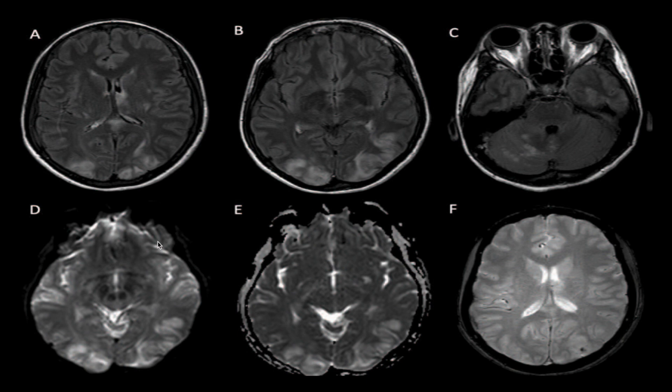In panels D and E — diffusion-weighted imaging and apparent diffusion coefficient (ADC) — panel D shows DWI hyperintensity involving cortical regions bilaterally indicating vasogenic edema. Panel E shows corresponding hyperintensity in the ADC confirming vasogenic edema. In panel F, susceptibility-weighted imaging (SWI) demonstrates a small focus of blooming within the left occipital region, indicating a petechial hemorrhage. This is the classical MR finding of PRES.